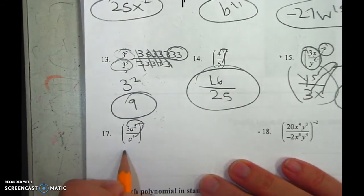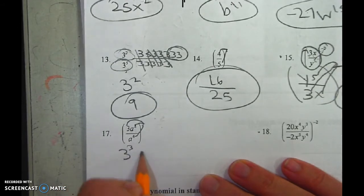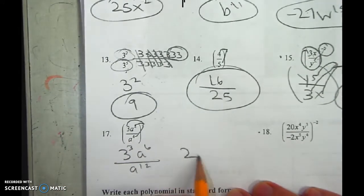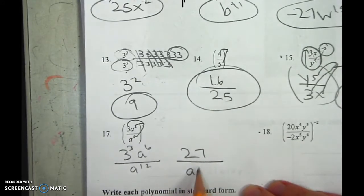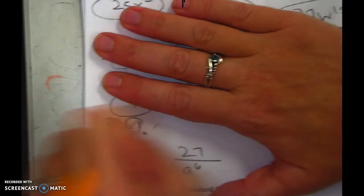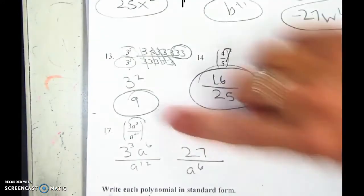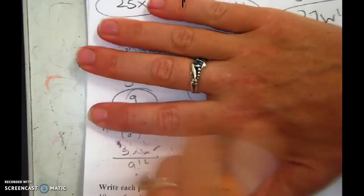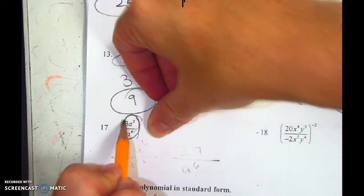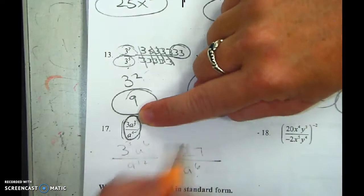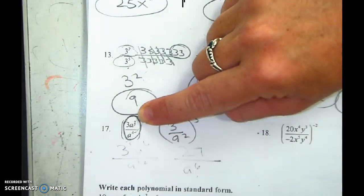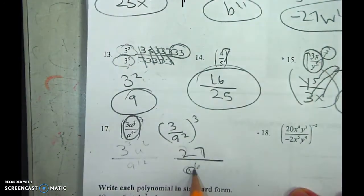Now, this feels right. And I'm going to do it this way. 3 cubed, a to the 6th, a to the 12th. 3 cubed is 27. More a's on top or bottom? Bottom by 6. But I want to show you what I would have done. I would have just gone straight here and simplified. More a's on top or bottom? Bottom by 2. Then I would have cubed it and gotten 27, a to the 6th.